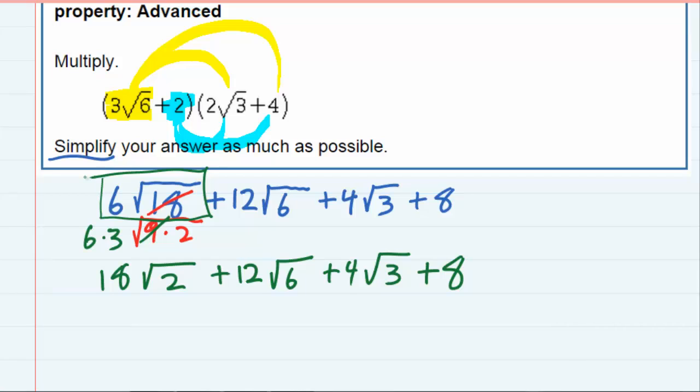Since that was the only part of the expression that simplified, and I wasn't left with any like terms—I've got square root of two, square root of six, square root of three, and no square roots—no like terms for me to combine here, so we've simplified as much as possible.